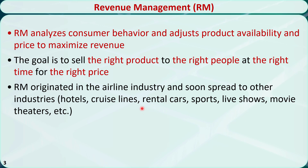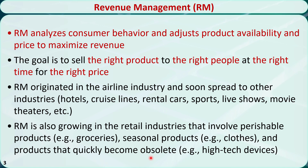Nowadays, almost all major airlines, hotel firms, cruise lines, rental car firms, sports events, live shows, and movie theaters have implemented revenue management systems to predict customer demand and optimize available price. Revenue management is also growing in the retail industry, involving perishable products like groceries, seasonal products like clothes, and products that quickly become obsolete like high-tech devices.